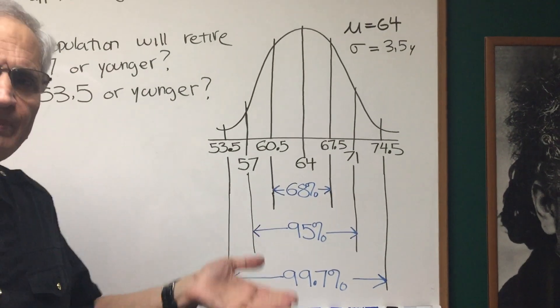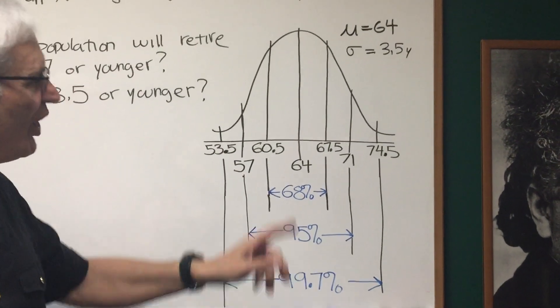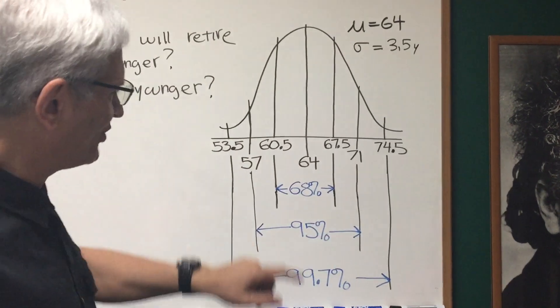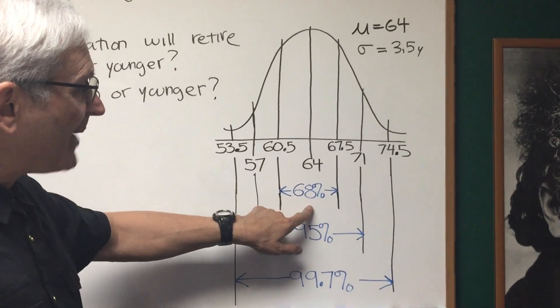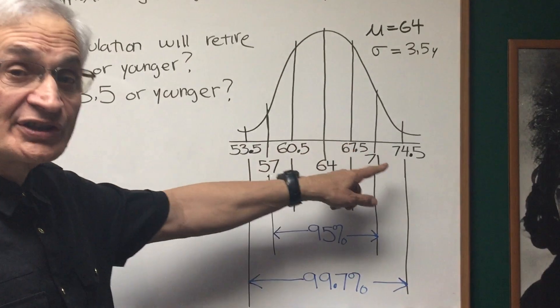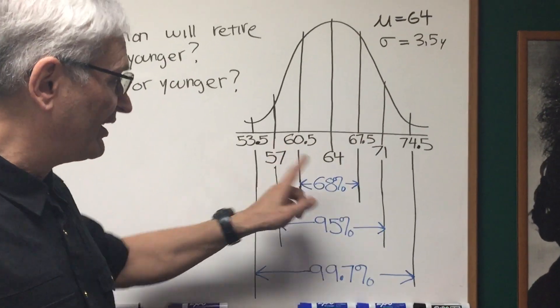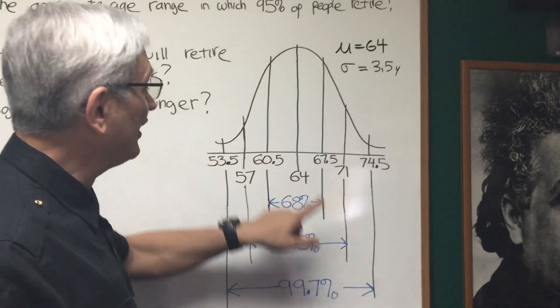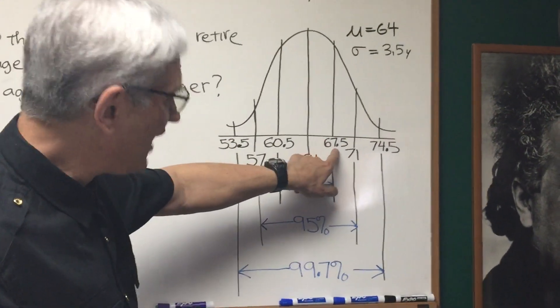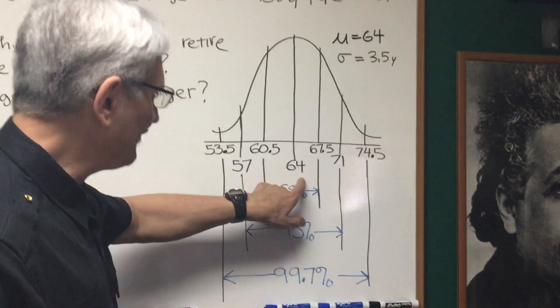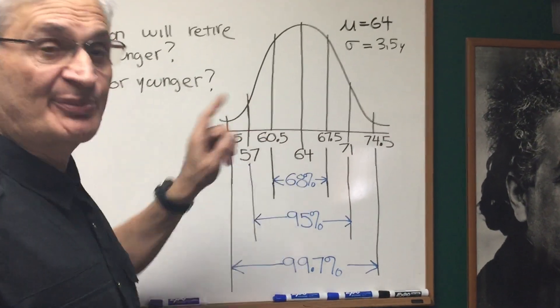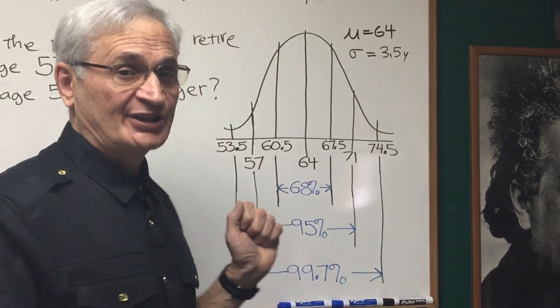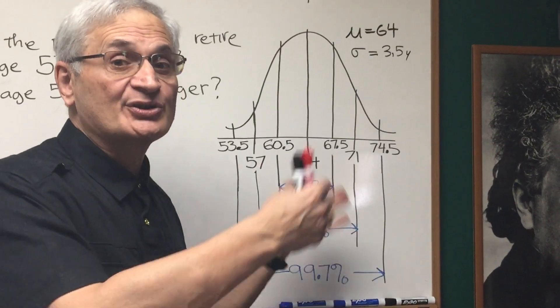So what can we glean from the standard normal curve? We know by the empirical rule that 68% of the population will fall within one standard deviation of the mean. So 64 is the mean. One standard deviation, which is 3.5 years, 64 plus 3.5 is 67.5. 64 minus 3.5 is 60.5. 68% of the population will fall between those two ages.